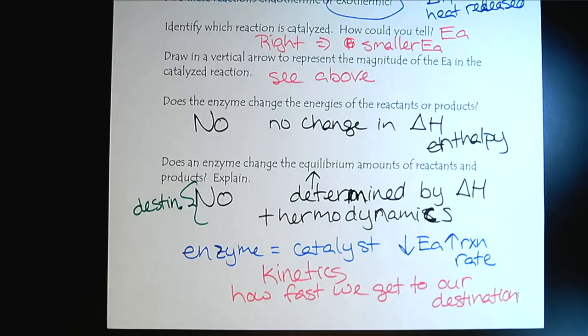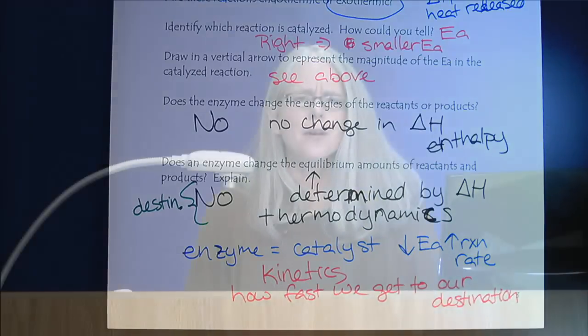That wraps up our introduction to enzymes — looking at it at both the chemical level and the interactions between the enzyme and the substrate, then taking that interaction and showing how we represent it symbolically on a reaction energy diagram, and keeping in mind the difference between thermodynamics and kinetics. When we're talking about enzymes, it's all about kinetics and speeding up reactions. Please take some time now to work a few homework problems to reinforce your understanding.